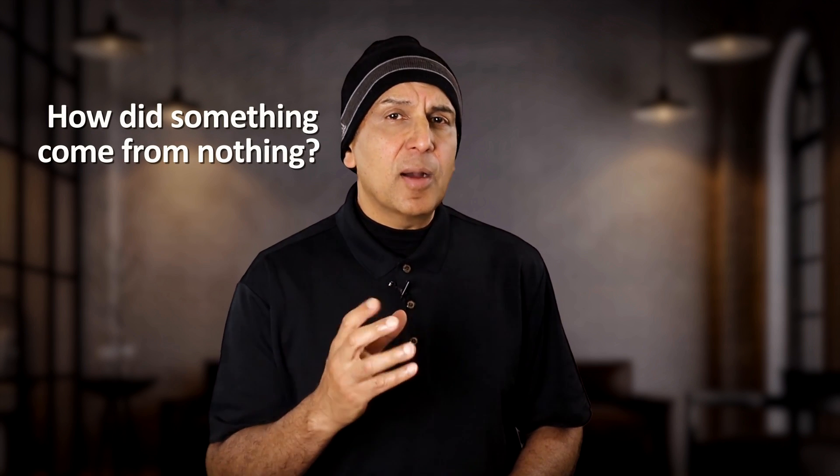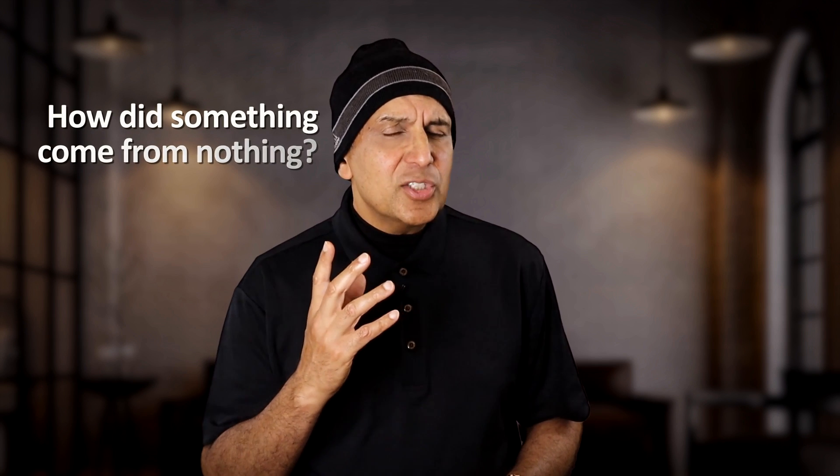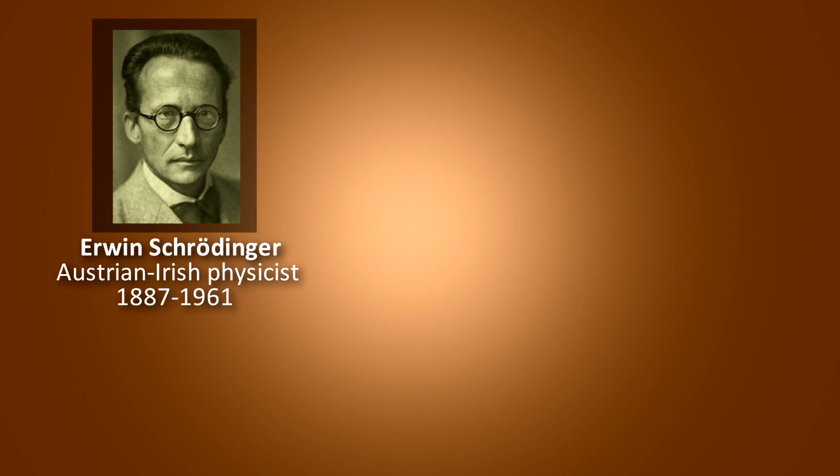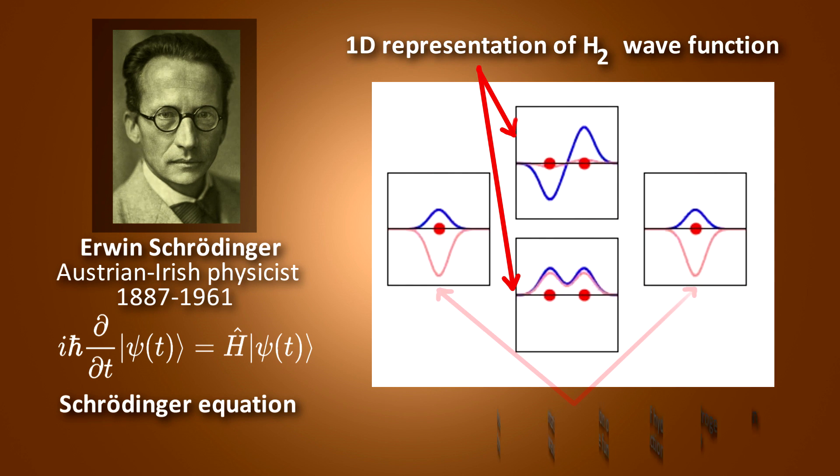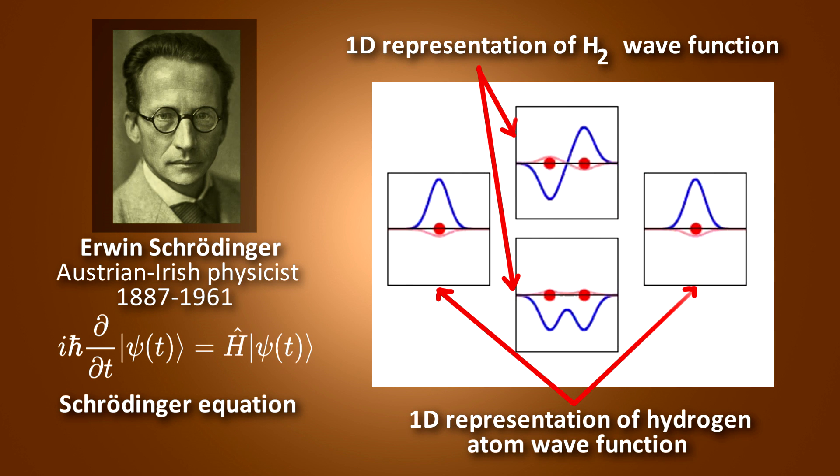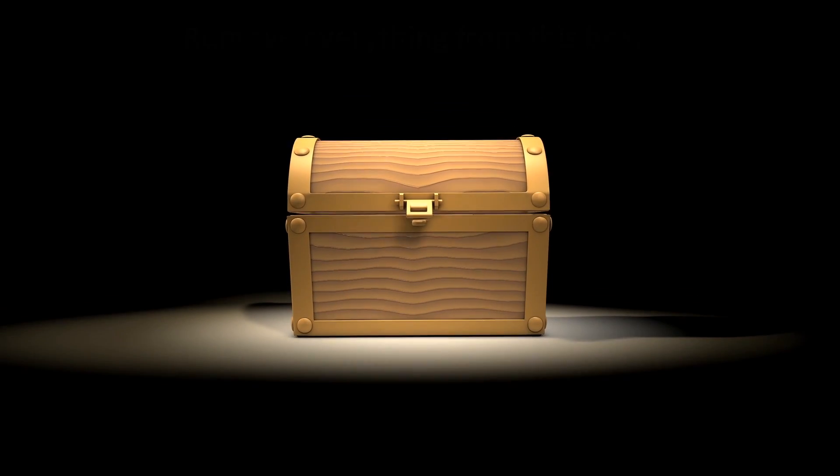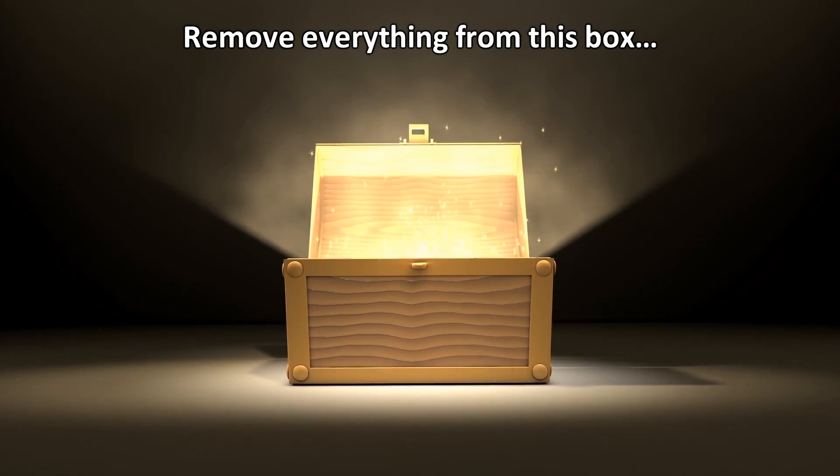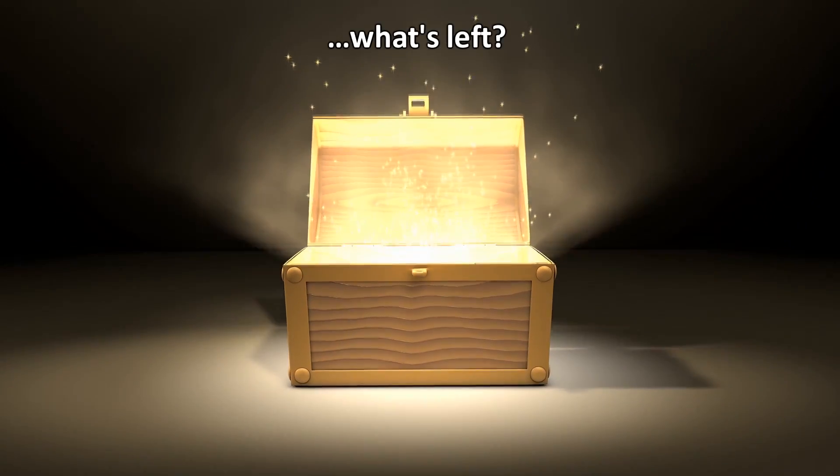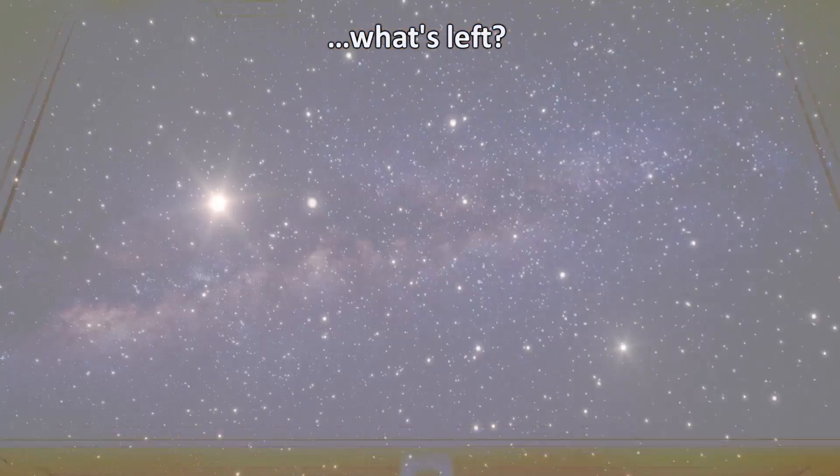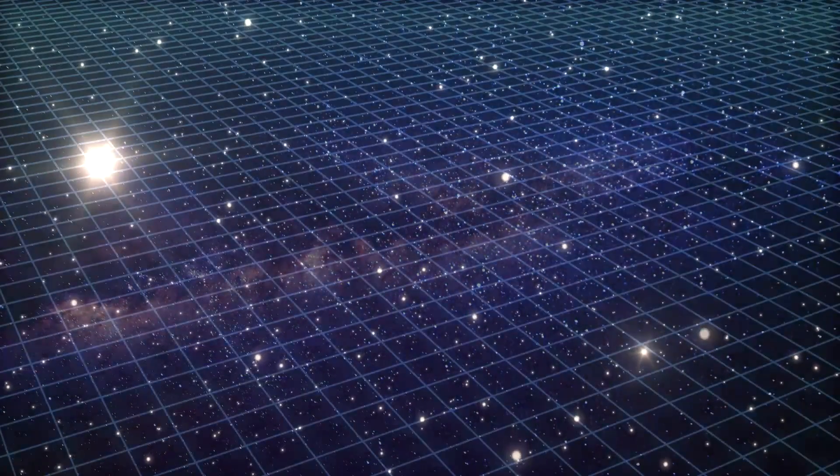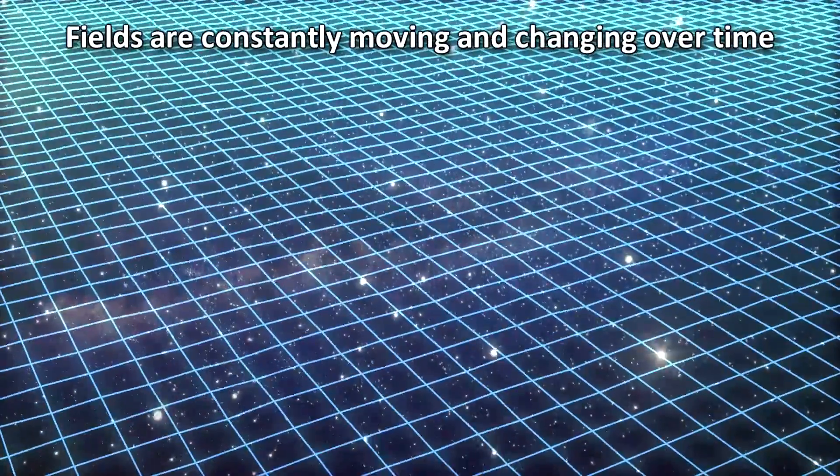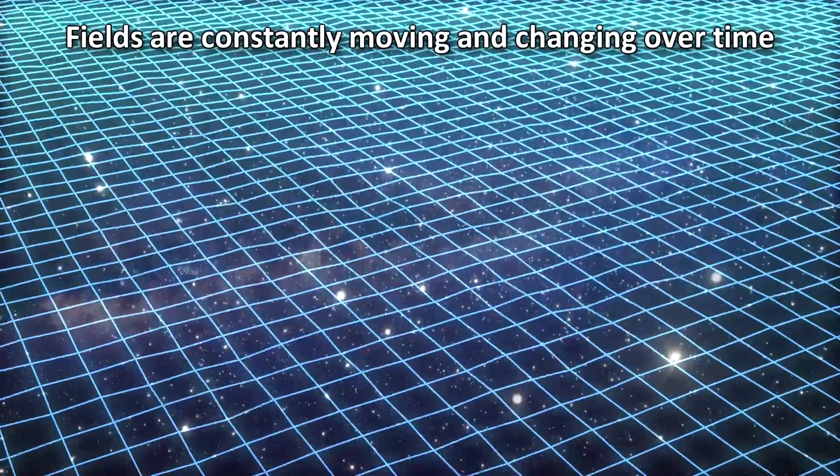The first thing we have to address is the problem of how something can come from nothing. I think this is considered a problem because this question was formulated in a time before quantum mechanics. But with quantum mechanics now in our tool chest, this quote unquote problem has a workable solution. If you have a box and you take out all the objects, particles and radiation in that box, you might say that this box contains nothing. But in quantum physics, that box does not really have nothing. The laws of quantum mechanics will still be valid inside that box. This means it will still have quantum fluctuations.